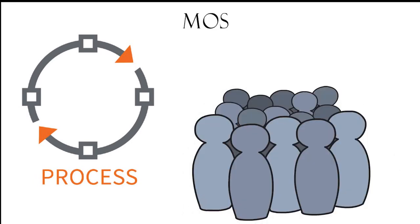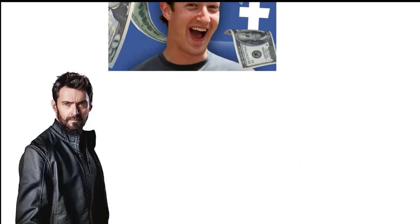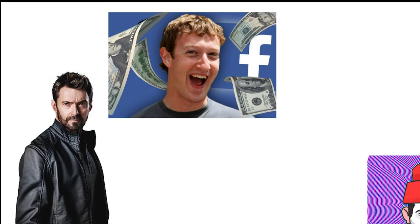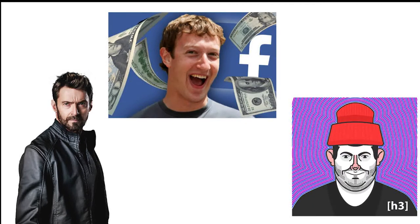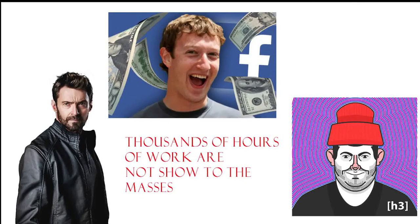For example, the script will have you believe that the actor gets the blockbuster role from an event. Some college kid invents the biggest social media site on planet earth from an event. The YouTuber becomes a millionaire from an event. What the script does not highlight is the process that underlies these events.